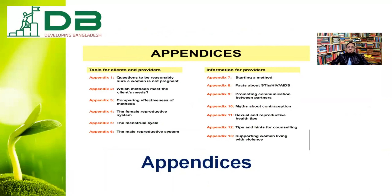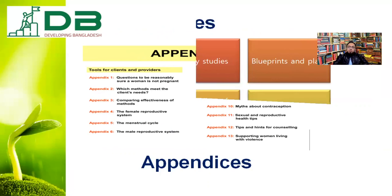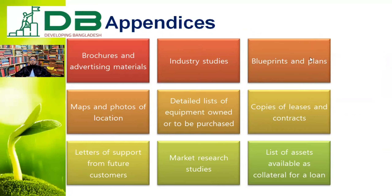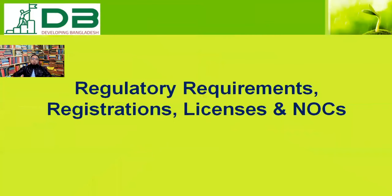In the appendix stage, you have to attach some documents. For example: brochure or advertising materials of your company, industrial study if you have any, blueprint of the plan, maps and photos of the location, list of equipment you own, copies of lease or contract documents, letters of support from future customers, market research study reports, and list of assets and collateral available for loan. These documents should be attached with your business plan.